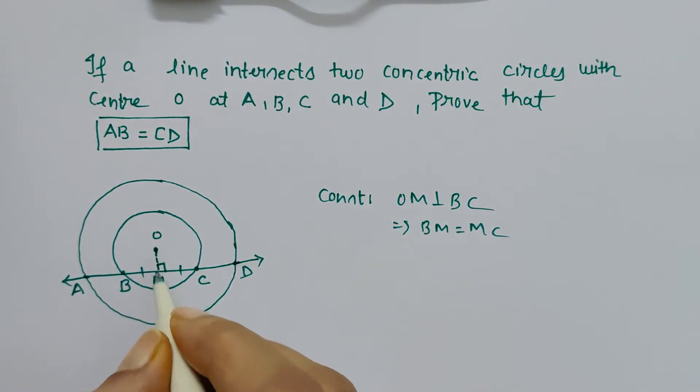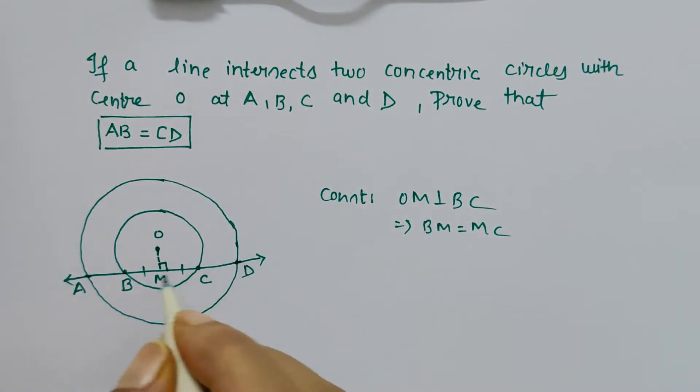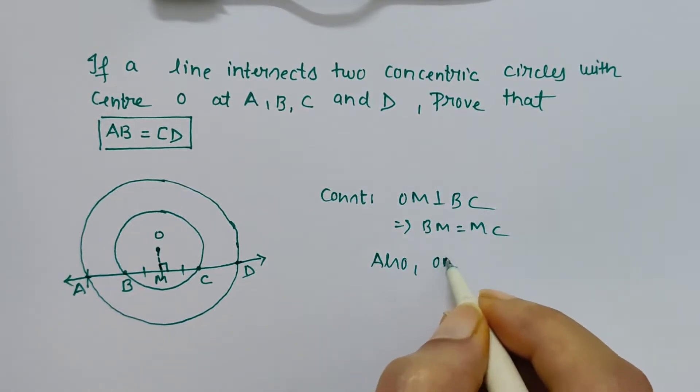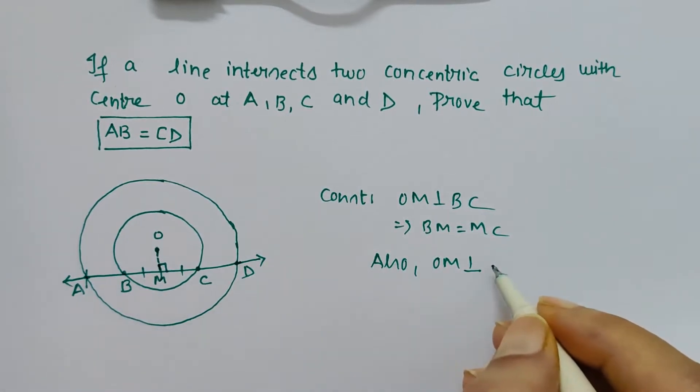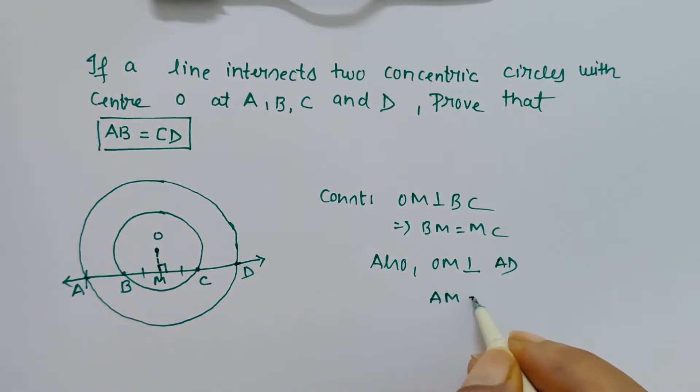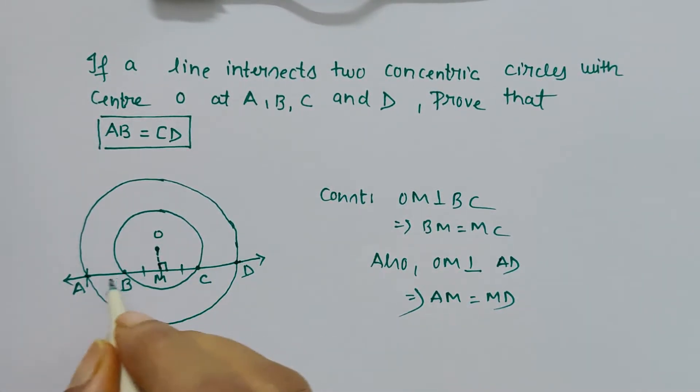Similarly, OM is also perpendicular to the outer circle chord AD. This means the complete segment AM will equal MD. Since the line perpendicular from the center bisects the chord, AM equals MD.